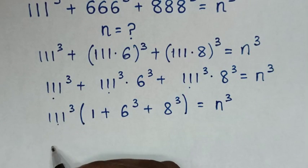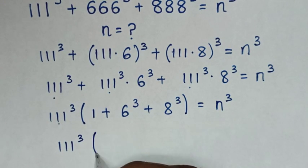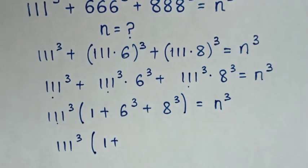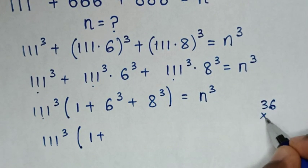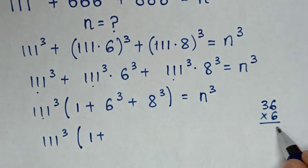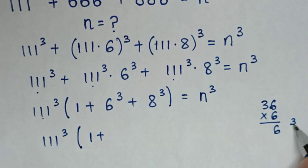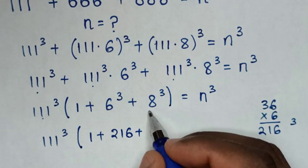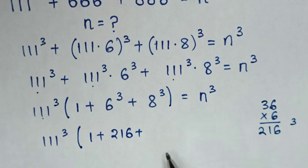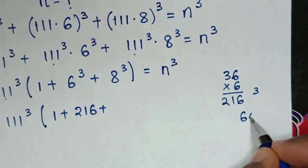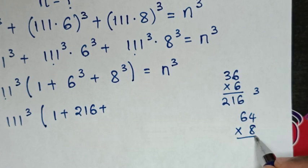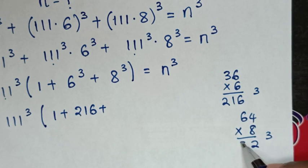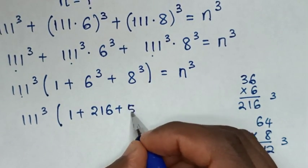Then in the next step, we calculate: 6 power of 3 is 6 times 6 times 6. 6 times 6 is 36, times 6 is 216. And 8 power of 3 is 8 times 8 times 8. 8 times 8 is 64, times 8 is 512.